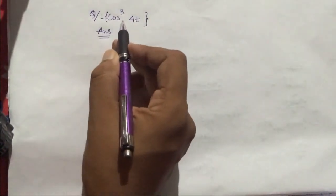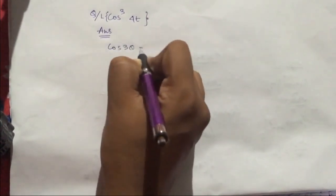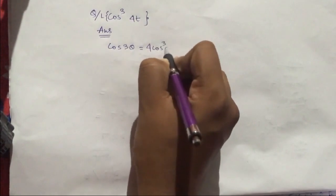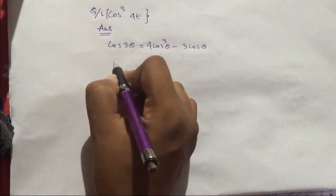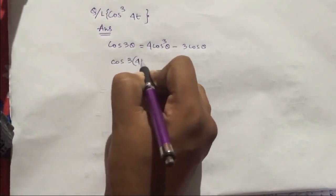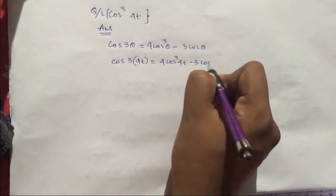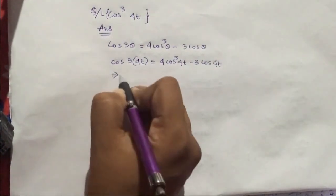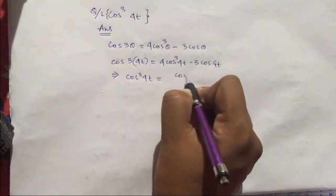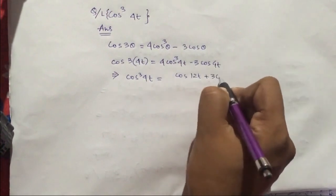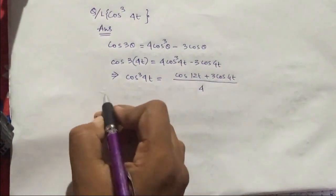The next question is Laplace transform of cos³(4t). We know the trigonometric formula cos(3θ) = 4cos³θ - 3cosθ. So cos(12t) = 4cos³(4t) - 3cos(4t). From this, we can find cos³(4t) = [cos(12t) + 3cos(4t)] / 4.